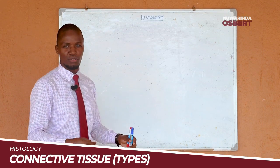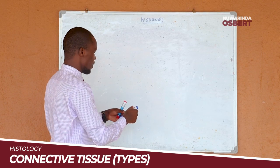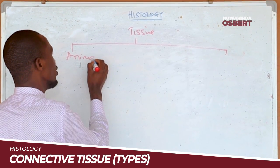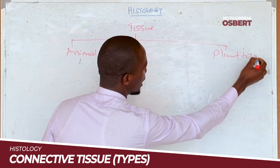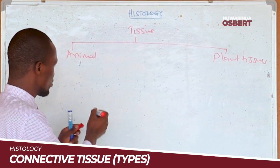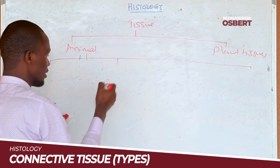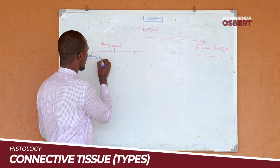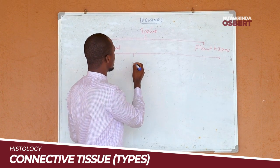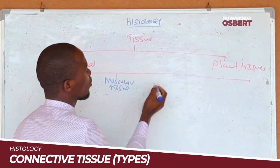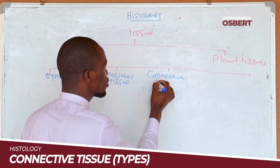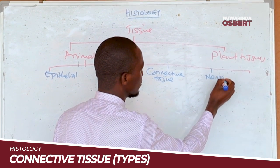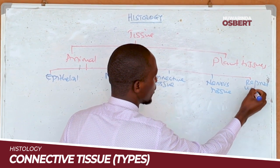We have known from the start of this series that tissues are categorized into animal tissues and plant tissues. Animal tissues are of different types. We have epithelial tissue, which we have finished. We have mastural tissue, connective tissue, nervous tissue, and reproductive tissue.